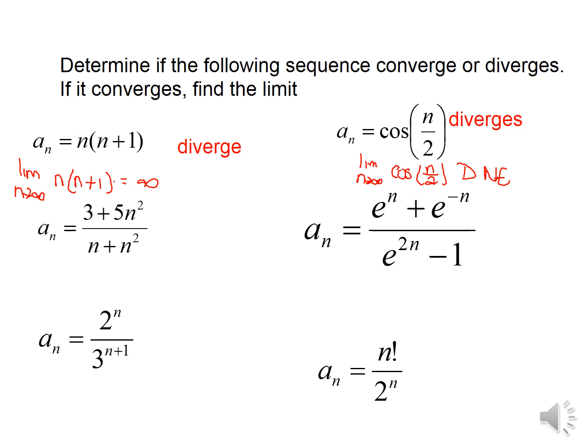In the next example we can use dominance of the lead term. The highest exponent in the numerator is n squared and the highest exponent in the denominator is also n squared; the lower-order terms become negligible as we go towards infinity. So the limit is going to be the ratio of those two lead terms, which is five. We say this converges and it converges to five.